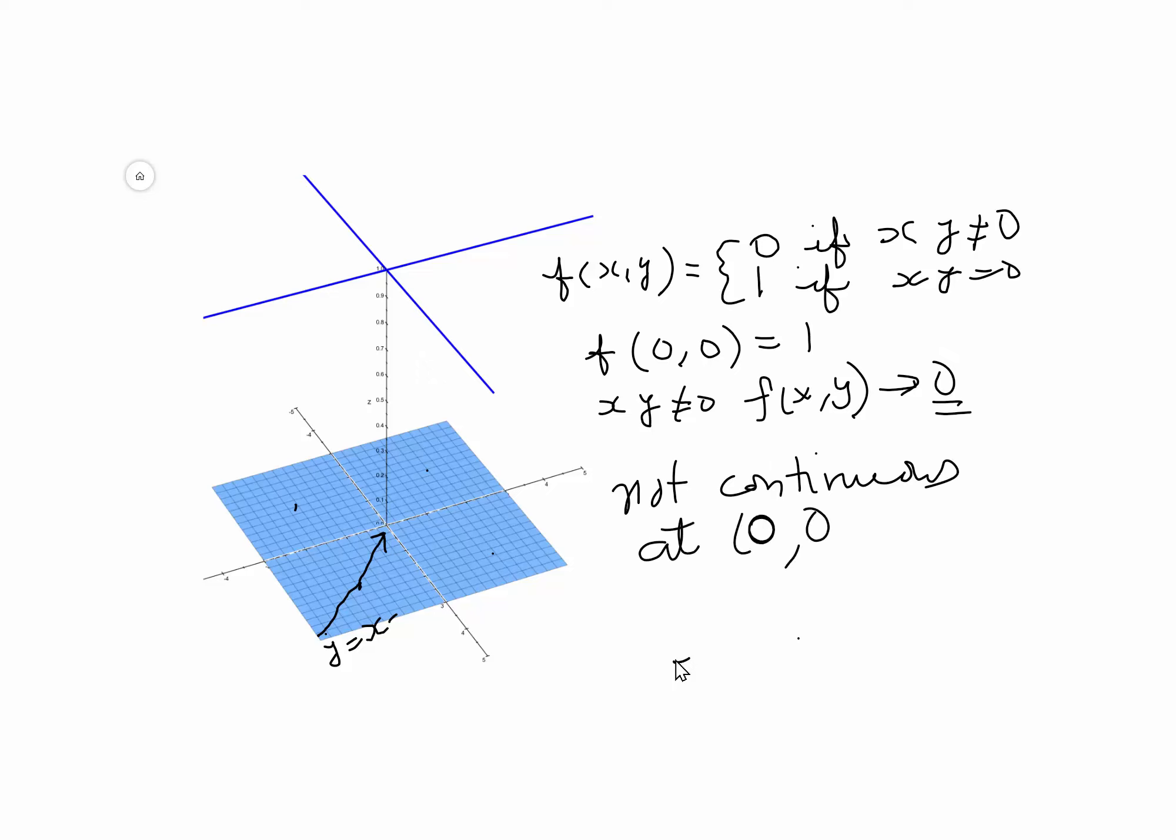We see the function is not continuous at (0, 0). Now let's go ahead and compute the partial derivatives of this function at (0, 0) with respect to x and with respect to y.